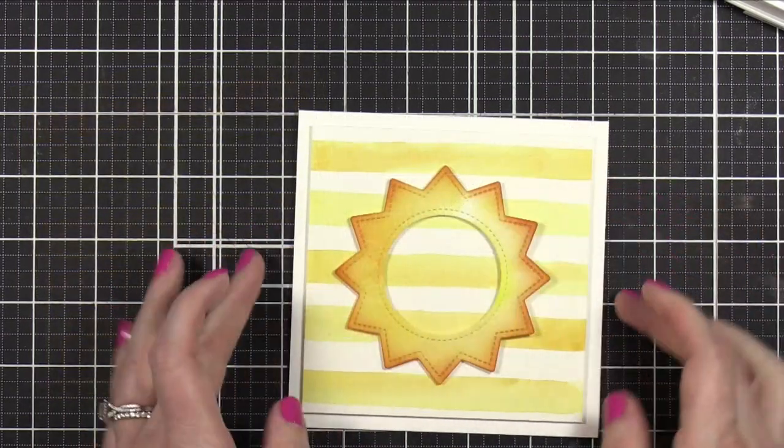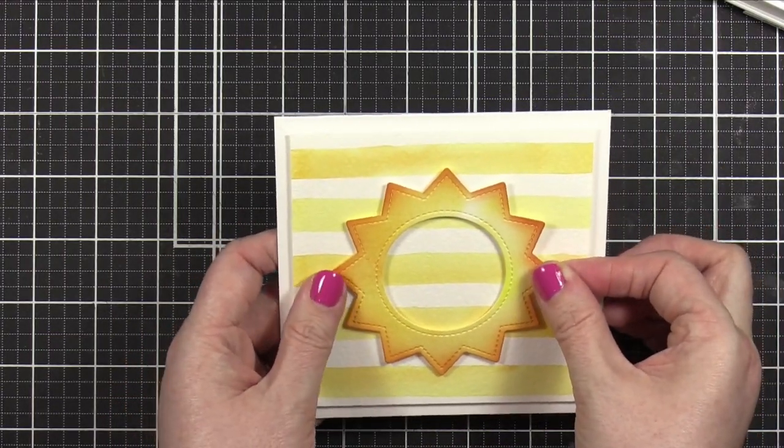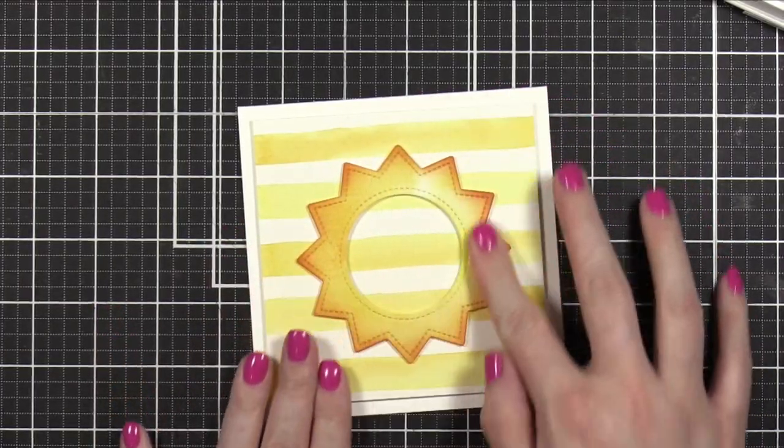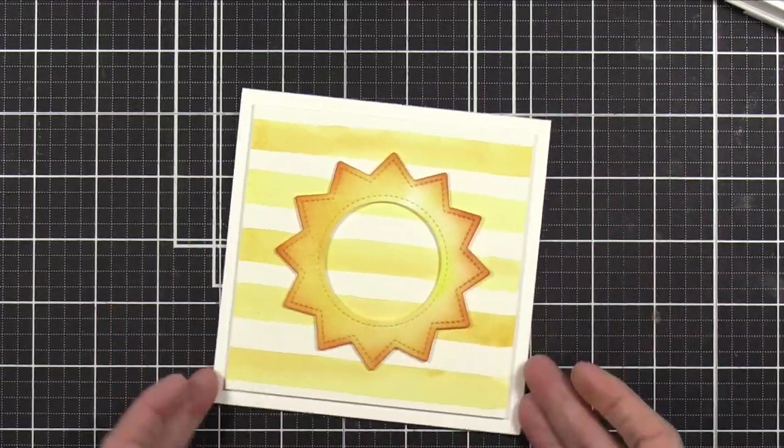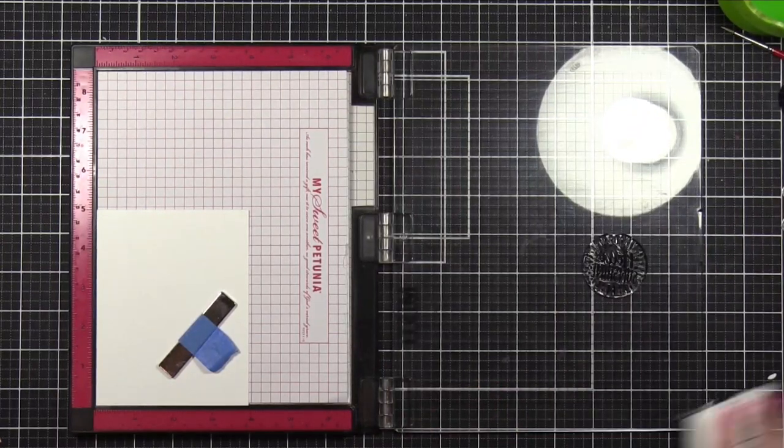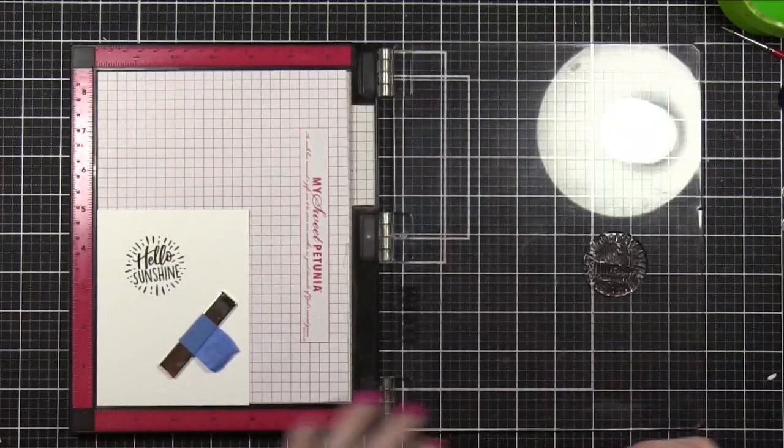All right, so I've got my foam on my frame, and I put that directly on the front of my card, and now I'm going to work on the greeting. So I'm going to go back to that stamp set that I showed you guys at the beginning called Magic Messages, and I'm stamping one of the greetings in VersaFine Onyx Black ink. This greeting says, Hello Sunshine, so it's perfect for this card.